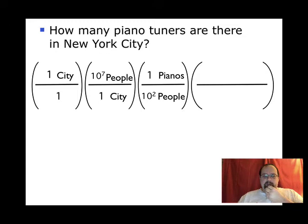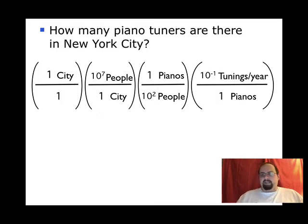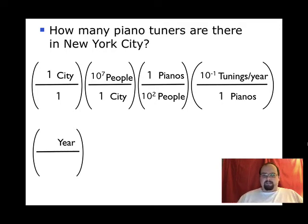So now I've got to get rid of pianos. And I want to go from pianos to piano tuning. And I know the pianos need to be tuned every once in a while. But not too often. So I'm going to go from pianos to tunings per year. I'm going to say one piano needs to be tuned every 10 years. Every 10 to the minus 1 tunings per year. Be real careful here. This year looks like it's on the top of the fraction, but it's actually on the bottom of the fraction. It's tunings per year.